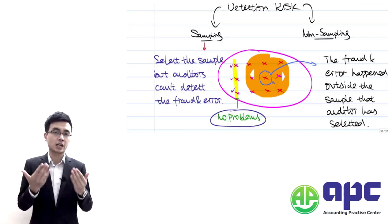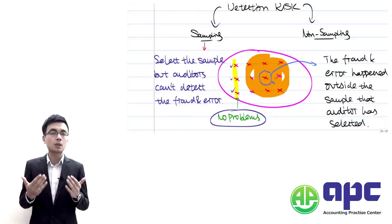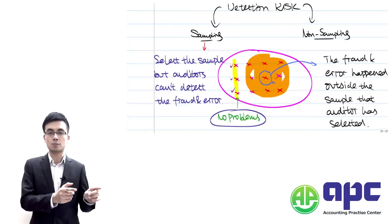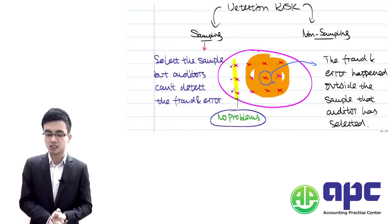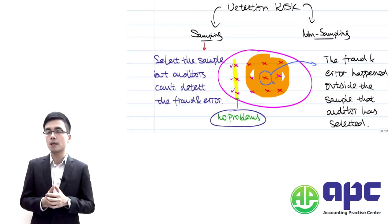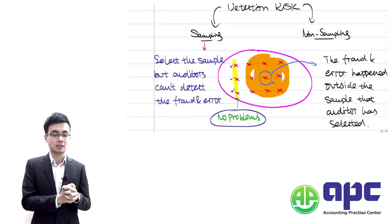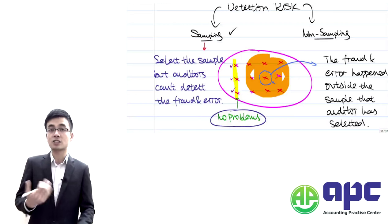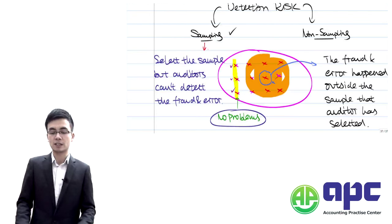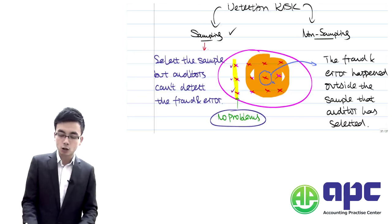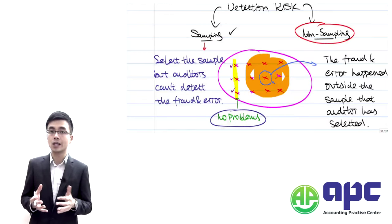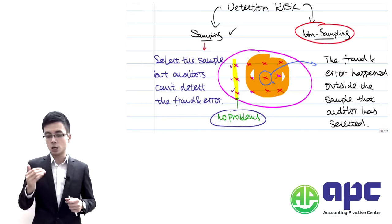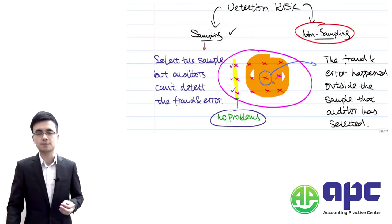One example commonly tested by examiners: if you are auditing a particular client for the first time, you're not familiar with the operations of that business, which gives rise to sampling risk — you select your sample but can't detect fraud and errors. Or maybe the way you select your sample is not appropriate. We'll look at how to select samples in a later section.